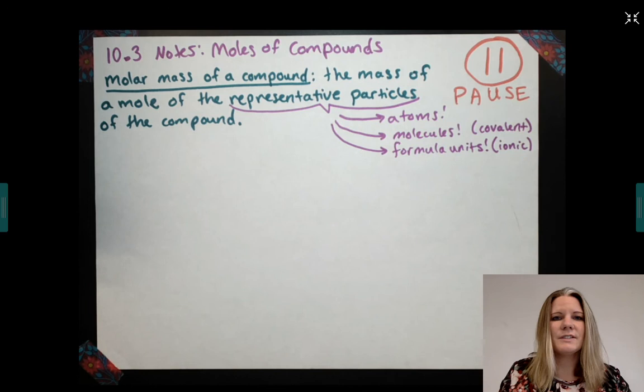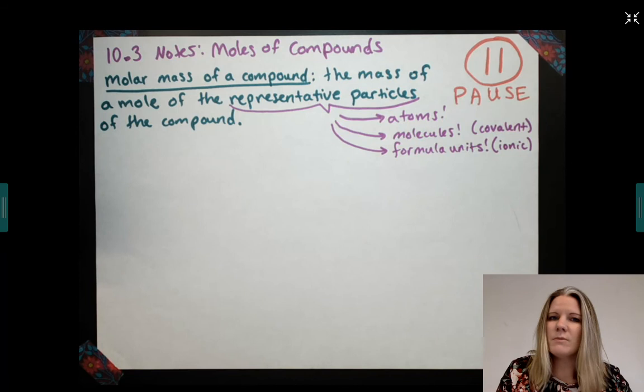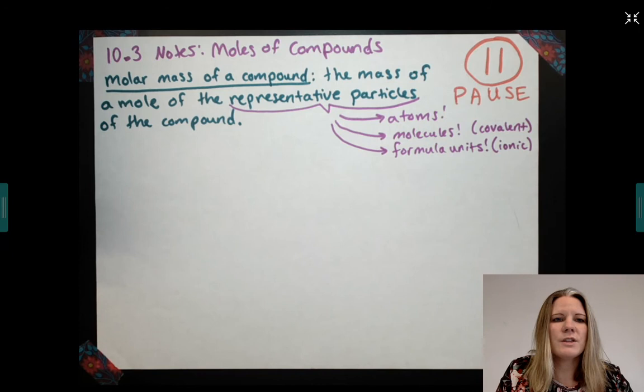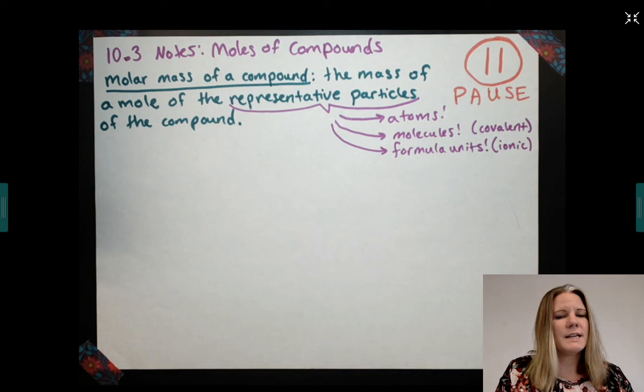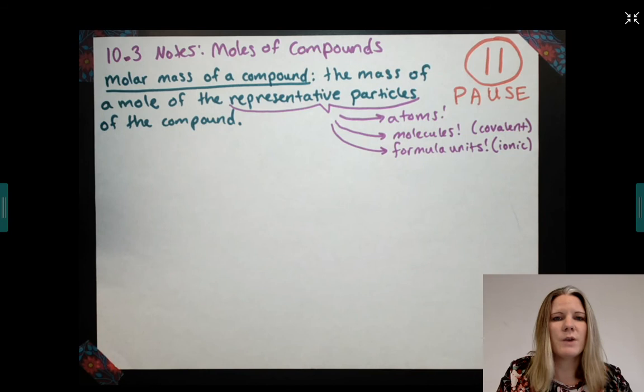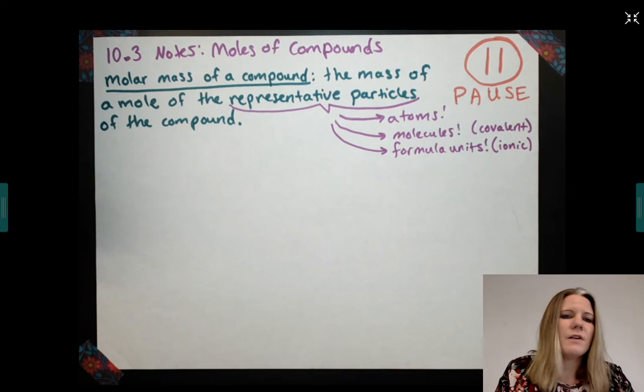So 10.3 is about moles of compounds. Now we did moles of elements before and moles of atoms, but we didn't do moles of compounds yet. So let's define officially: the molar mass of a compound is the mass of a mole of the representative particles. Remember in the first section, we learned that representative particles could be atoms, molecules, or formula units. So you'll have to write down the right one on your homework. Molecules is for covalent bonds, and formula units are for ionic bonds of a compound.